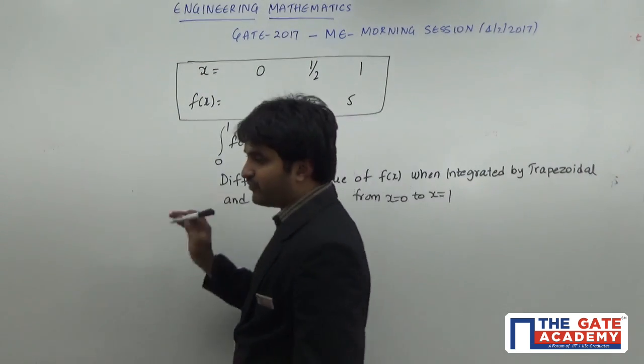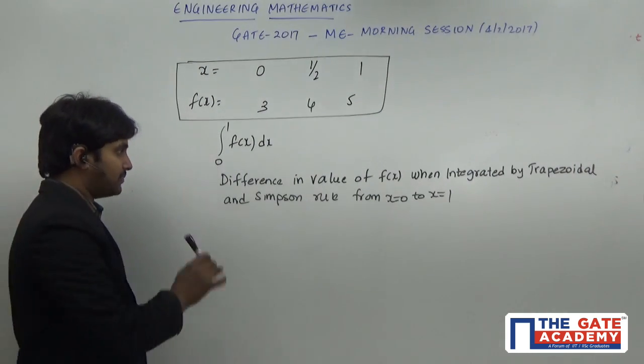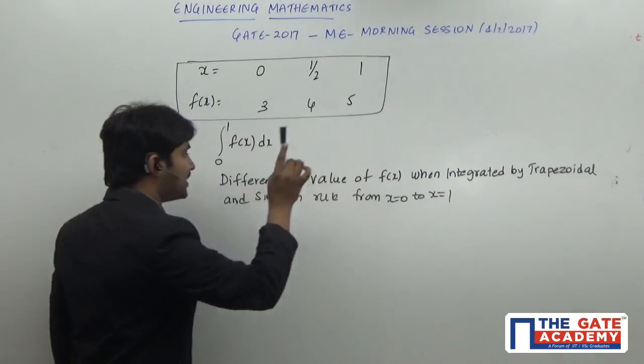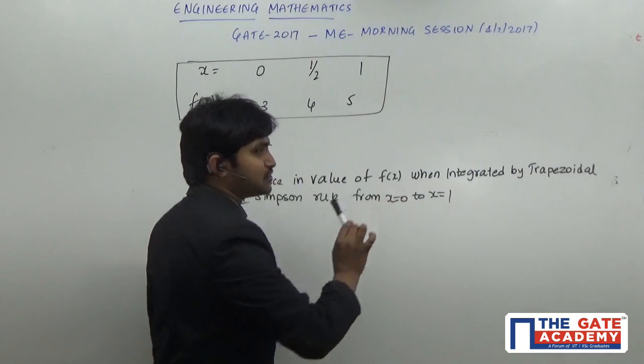Now what is the question? We are integrating the f(x) from 0 to 1. We have to find the difference in the value of f(x) when integrated by trapezoidal and Simpson's rule, from x equals 0 to x equals 1.